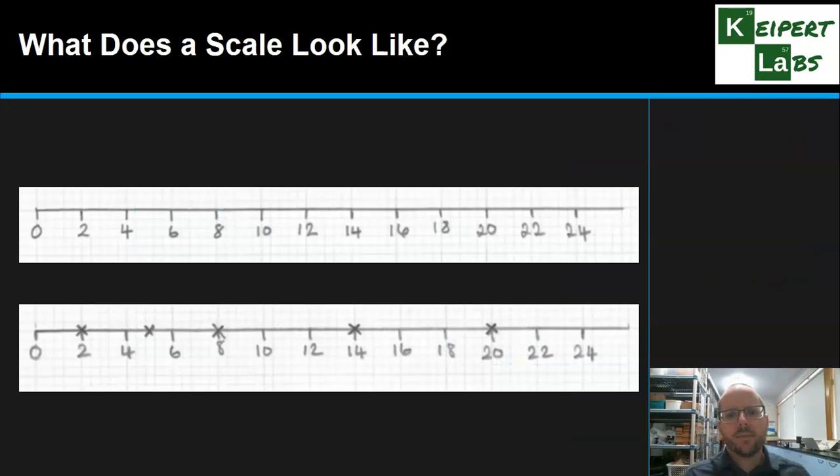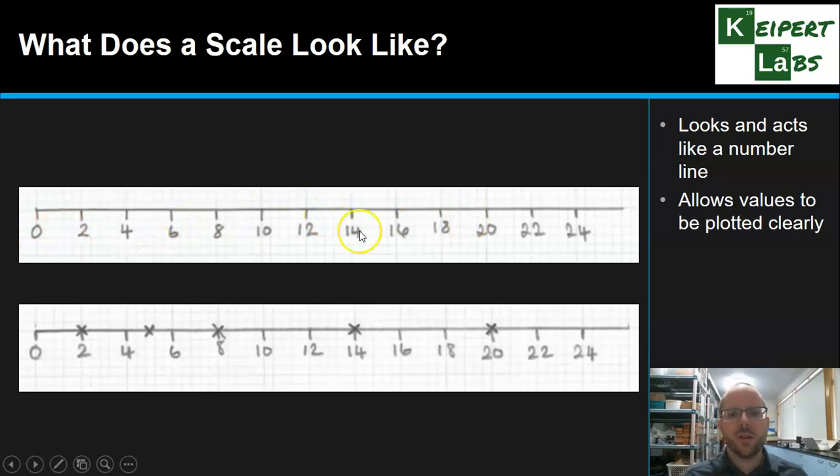So what does a scale look like? Well here's an example of a 2D scale. It looks and acts like a number line, like you might be familiar with from earlier on in your high school maths. Looking at this idea that we have this horizontal line where we've got neatly spaced intervals that have numbers written underneath them, that then we can go along and we can plot data points along, based on what that number is. Here we've got a scale that we've established that goes up by 2s, from 0 all the way up to 24.